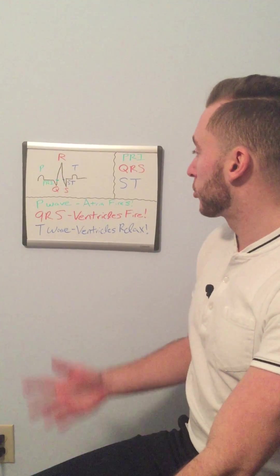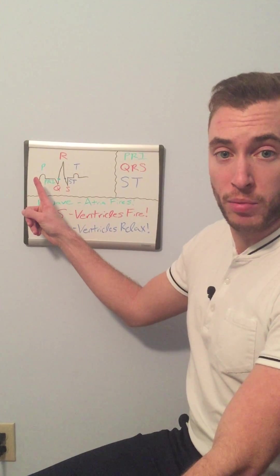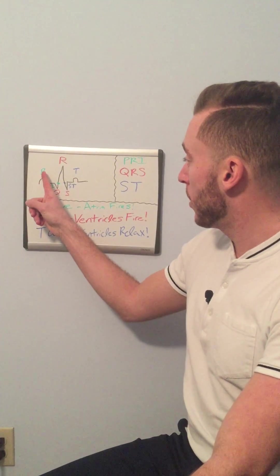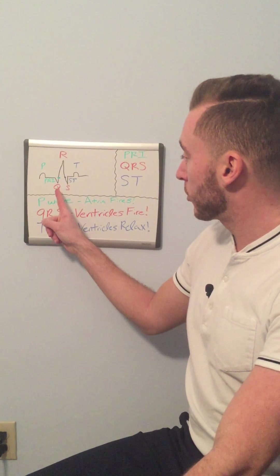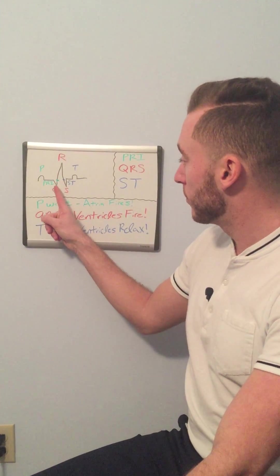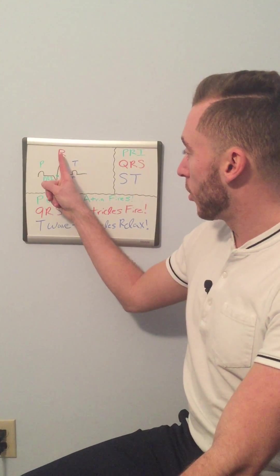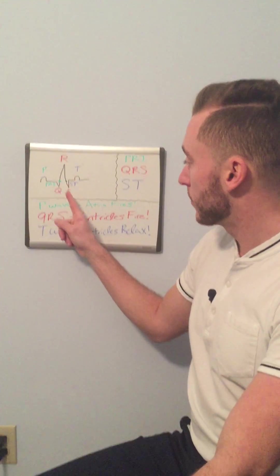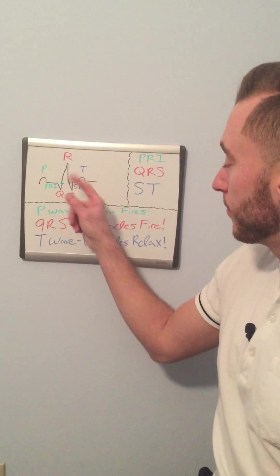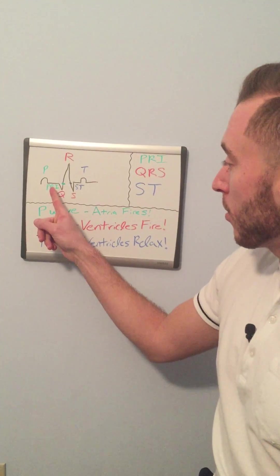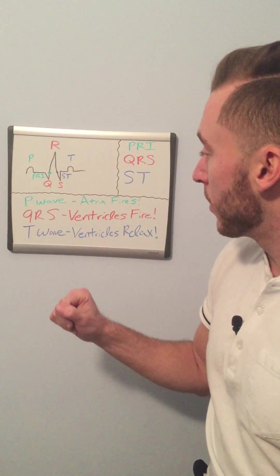So let's get started. We have everything labeled. We've got a P wave here, which is the wave right here. Then we have the next wave, the Q wave, which is from here to here — that green dot will stop the Q wave. The R wave up here, S wave, and we have the T wave. Now this PRI and ST, we'll get to that in a moment.